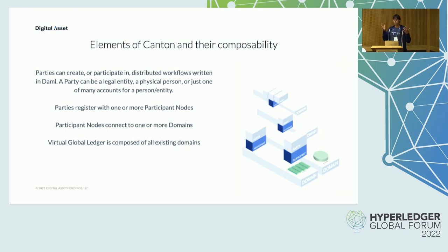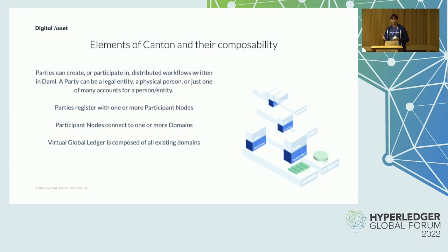Nodes can host multiple parties and facilitate party access to the ledger. Every node can connect through Canton to multiple DAML ledger instances, each called a domain in Canton. A domain can be implemented in different ways depending on the trust requirements — for low trust requirements, it can be implemented on a distributed ledger or in enclaves.